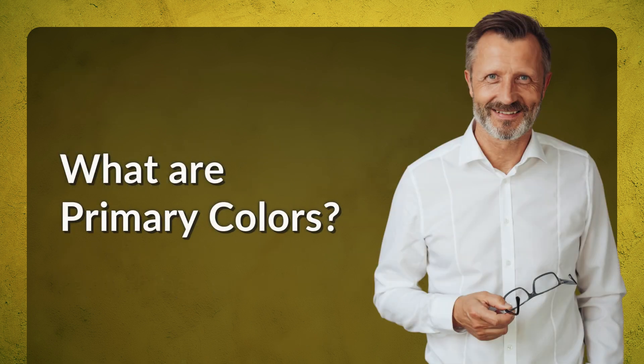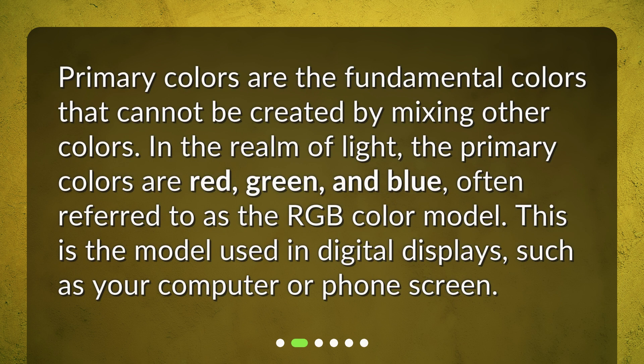What are primary colors? Primary colors are the fundamental colors that cannot be created by mixing other colors. In the realm of light, the primary colors are red, green, and blue, often referred to as the RGB color model. This is the model used in digital displays, such as your computer or phone screen.